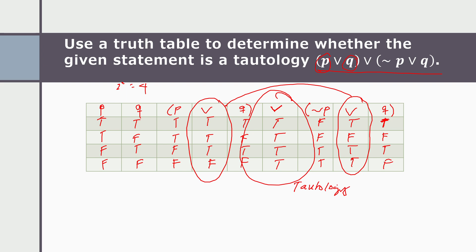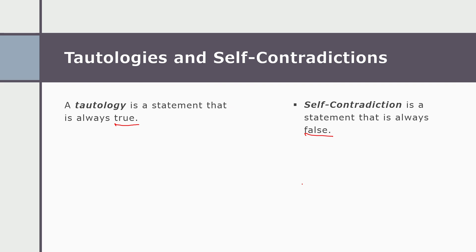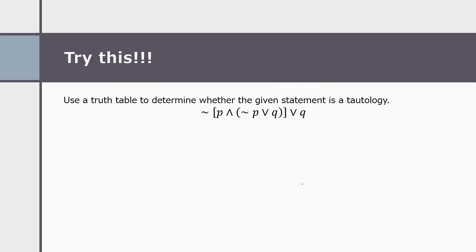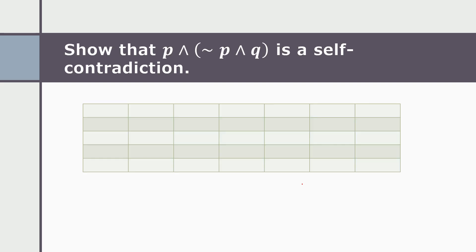Because the statement is always true, that confirms it is a tautology. Now let's talk about self-contradiction. A self-contradiction is a statement that is always false. Try using a truth table to determine whether the given statement is a tautology — that's your exercise at home. Now let's proceed with showing what is a contradiction.